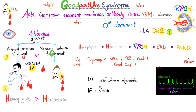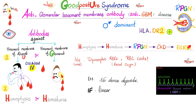Disease progression: hemoptysis first, then hematuria, then rapidly progressive glomerulonephritis, then chronic kidney disease, then end-stage renal disease. Treatment: manage symptoms and prevent progression with immunosuppressive therapy such as corticosteroids and cyclophosphamide. Since these are autoantibodies, you can try plasma exchange or plasmapheresis — remove the bad plasma and replace with new plasma without the autoantibodies. When everything fails, the options are dialysis or kidney transplant.